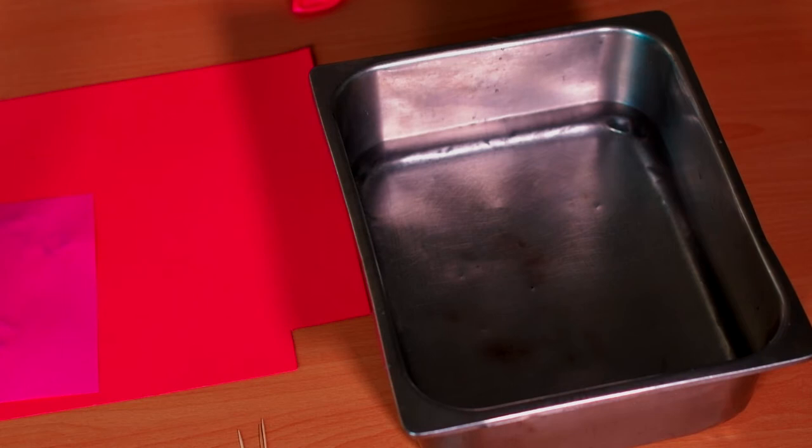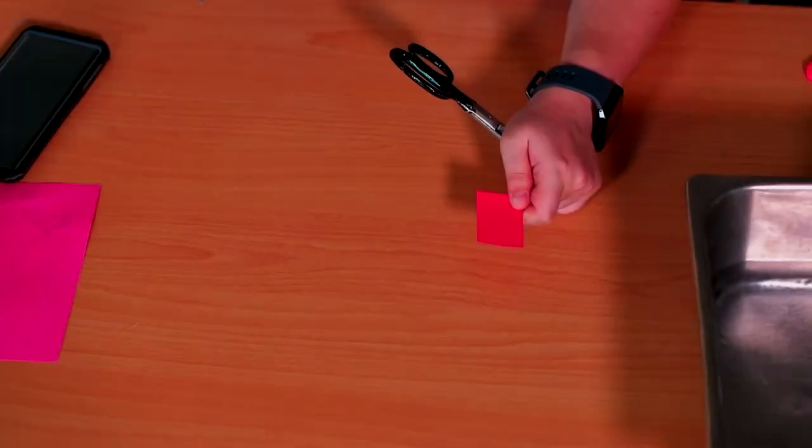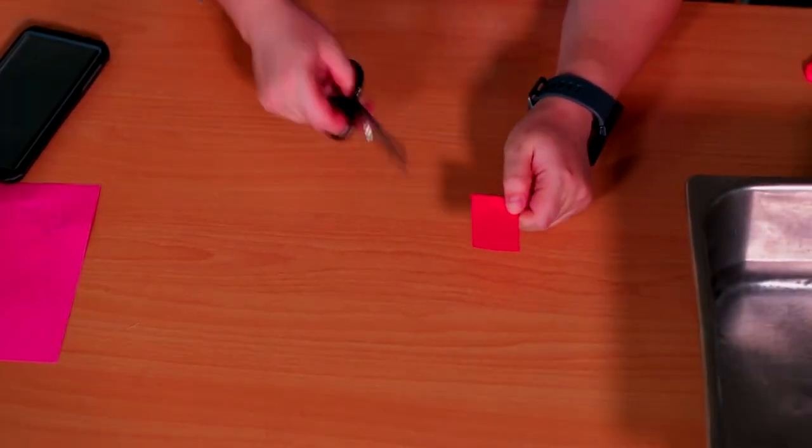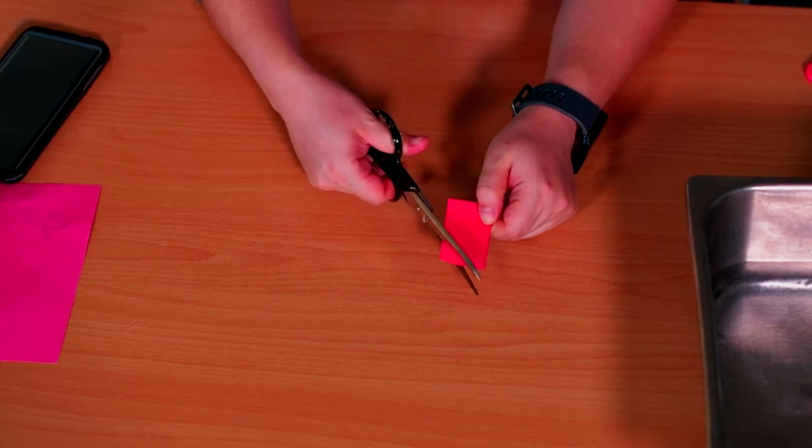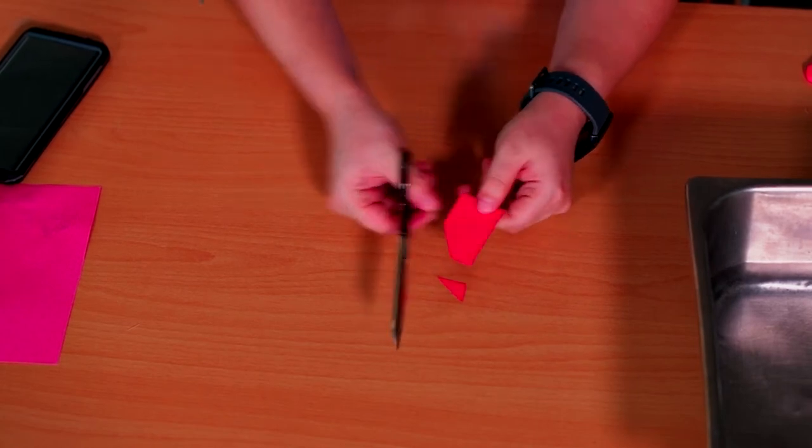First, cut your cardstock and regular paper into a small rectangle. Cut your cardstock to have a triangular top and a square cutout at the bottom.